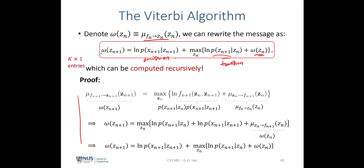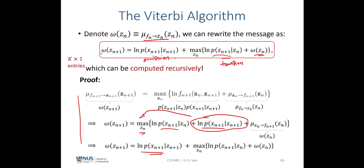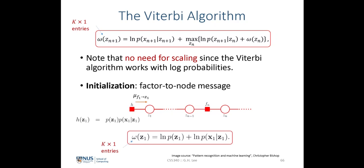The proof: starting from the factor containing the emission and transition probabilities, taking the log gives two additive terms. Since the emission term is independent of z_n, it can be pulled out of the max operator, leaving the transition and previous message terms inside the max. This confirms the recursive expression shown. Importantly, there is no need for scaling in the Viterbi algorithm since we are already working with log probabilities, so there is no multiplication of raw probabilities anywhere in the recursion.